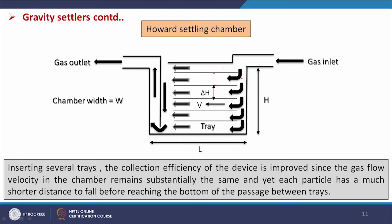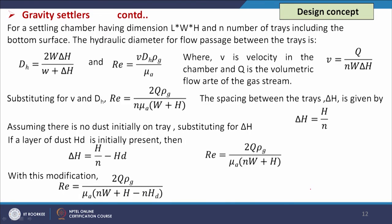By inserting several trays the collection efficiency of the device is improved, since the gas flow velocity in the chamber remains substantially the same, yet each particle has a much shorter distance to fall before reaching the bottom of the passage between trays. For a settling chamber with dimensions L, W, H, and n number of trays (including the bottom surface), the hydraulic diameter for the flow passage between the trays is dh = 4 × area / perimeter = 4·W·ΔH / (2·(W + ΔH)).